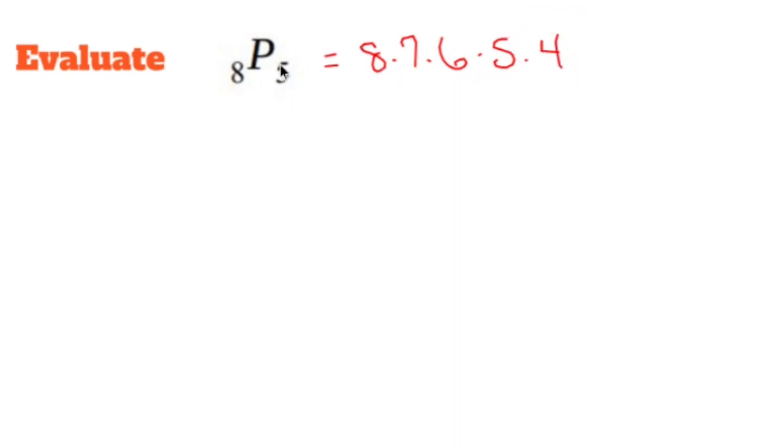So what you do is you write out what eight factorial is until you do five numbers, but I don't want to use that. That's just a lazy way. Don't want to do it that way.